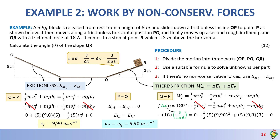So cos 180 degrees becomes negative. Our friction force is 80 newtons and Δx is 3 / sin θ. This equals zero for final KE, minus half of 5 times 9.9 squared for initial KE, plus 5 times 9.8 times 3 for the final potential energy, minus zero for the initial PE at Q. The only unknown is theta. Solving the mathematics, we find a value of 33.4 degrees. That is your final answer for this question.